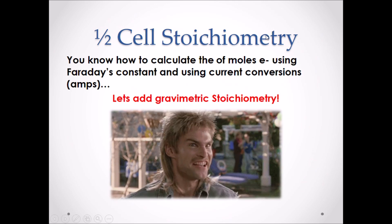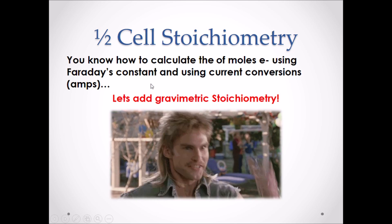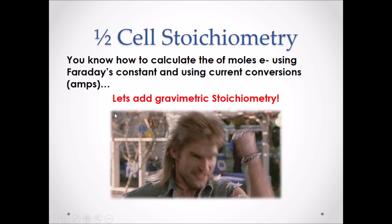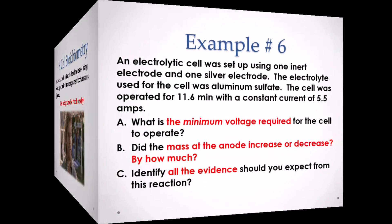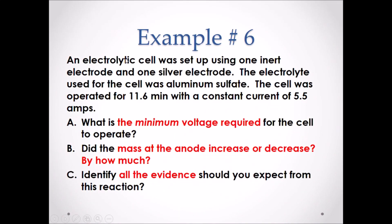Half cell stoichiometry — you now know how to calculate moles of electrons using Faraday's constant and current conversions. Now let's do gravimetric stoichiometry. Example number six: an electrolytic cell was set up using one inert electrode and one silver electrode. The electrolyte used was aluminum sulfate. The cell was operated for 11.6 minutes with a constant current of 5.5 amps. Pause the video and attempt examples a, b, and c.